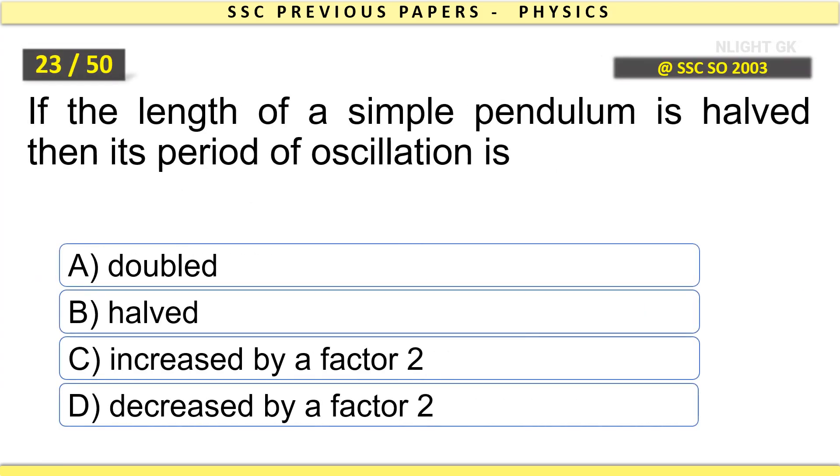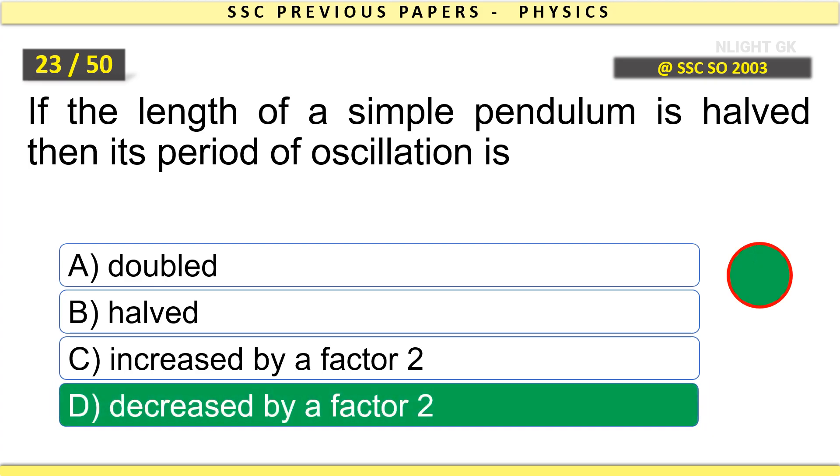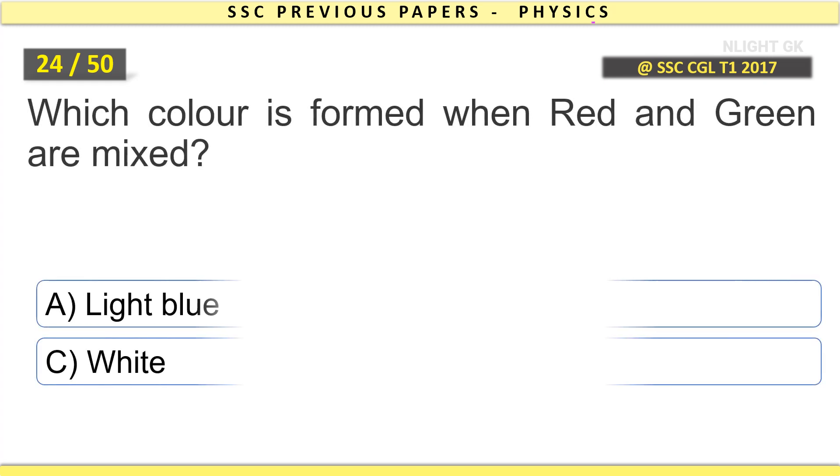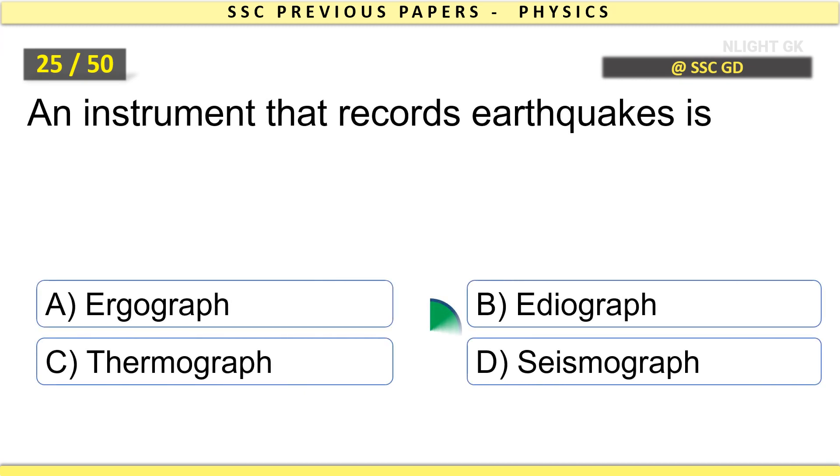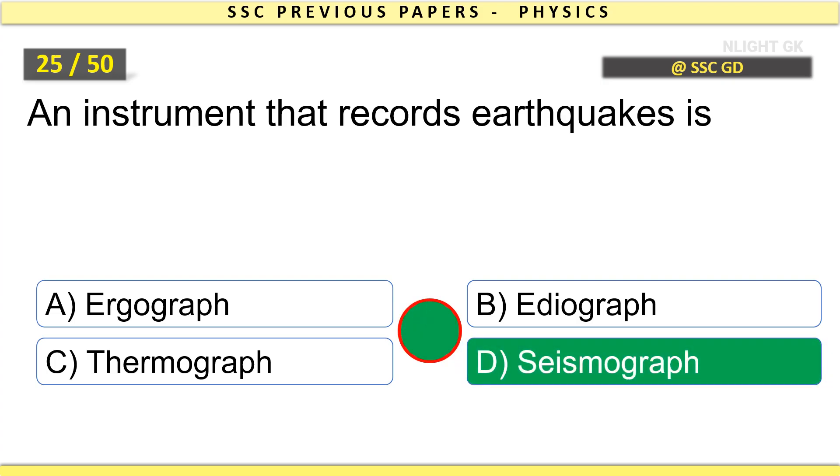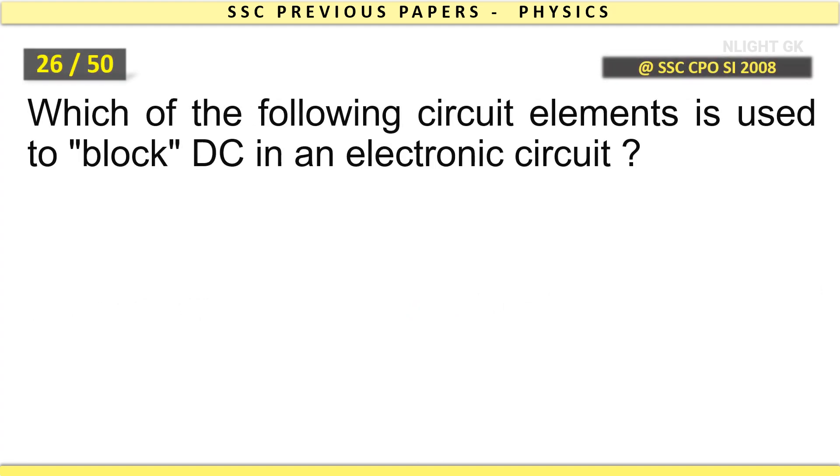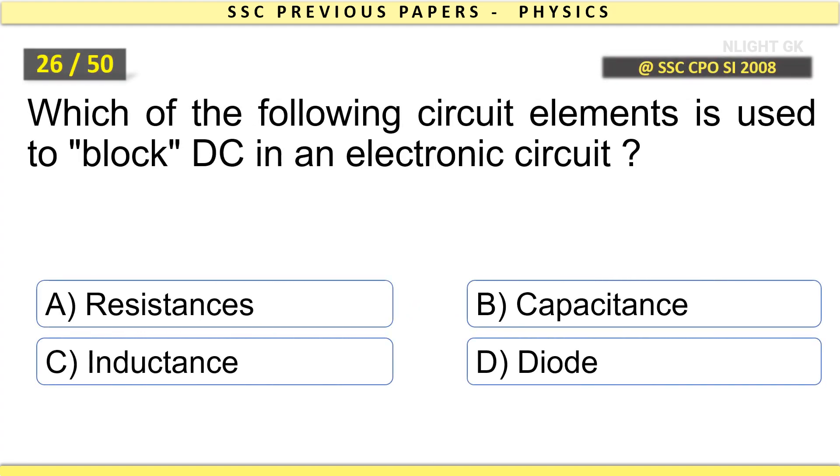Light rays enter the eye through the outer transparent structure at the front of the eye called the cornea. If the length of a simple pendulum is halved, then its period of oscillation is decreased by a factor of 2. Which color is formed when red and green are mixed? Yellow.